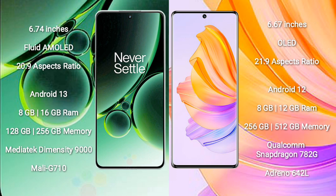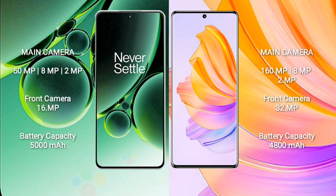OnePlus Nord 3 features a MediaTek Dimensity 9000 processor and Mali-G710 GPU. Honor 80 comes with 8GB or 12GB RAM and 256GB or 512GB internal storage, a Qualcomm Snapdragon 780G processor, and Adreno 642L GPU.